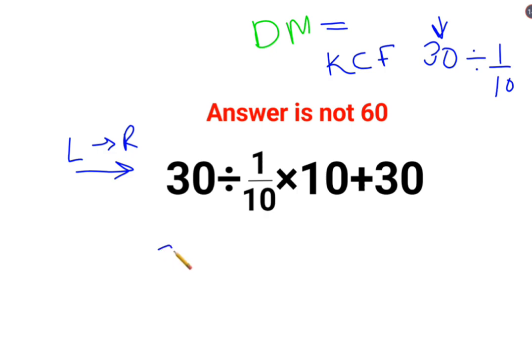K stands for keeping the first number as it is. C stands for changing the division sign to multiplication. And F stands for flipping or taking reciprocal of 1 upon 10, which is 10 multiplied by 10 plus 30.